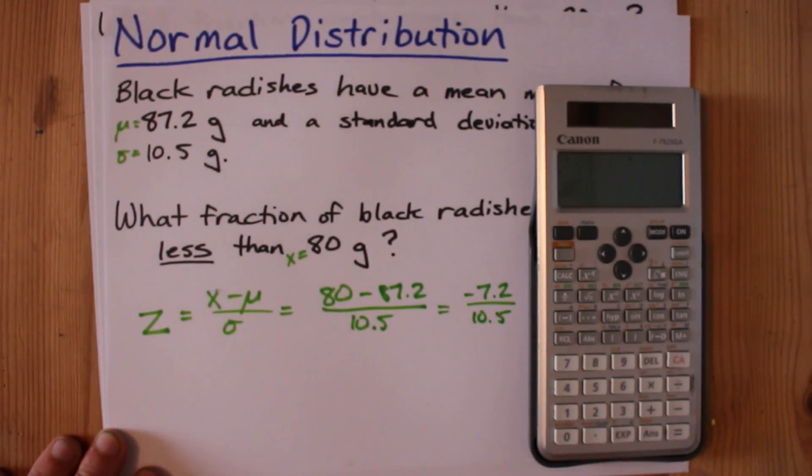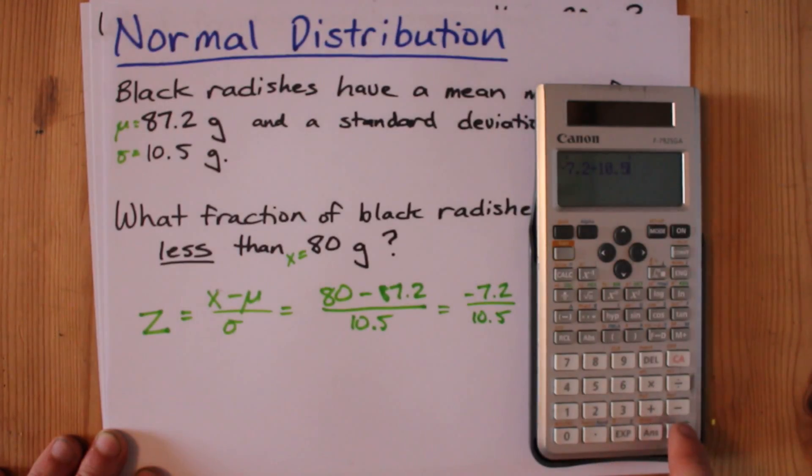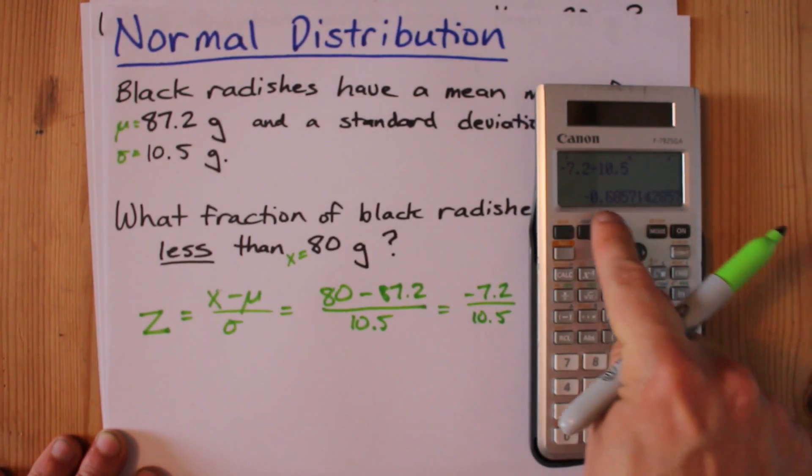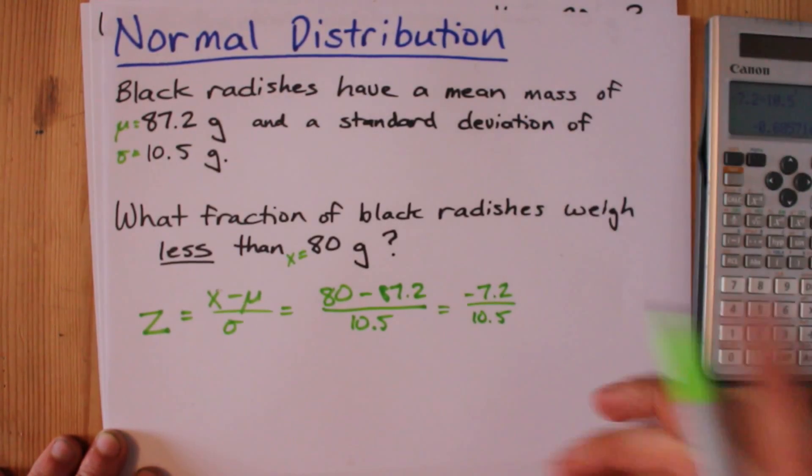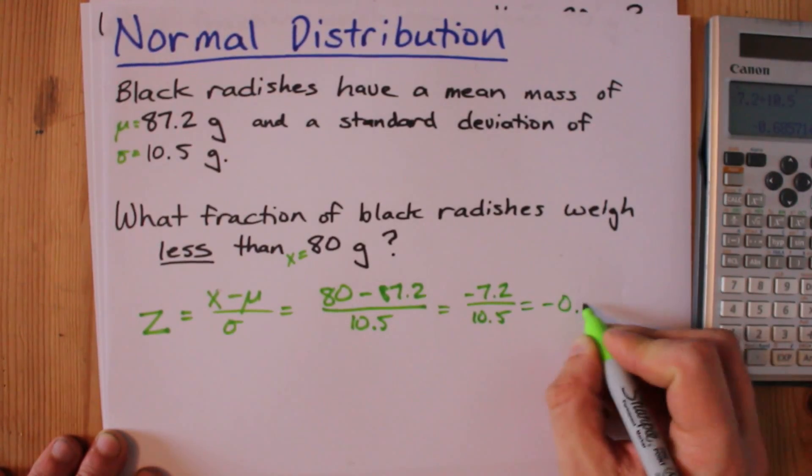Here's where I'm going to pick up my calculator. Negative 7.2 divided by 10.5, and I get negative 0.69.